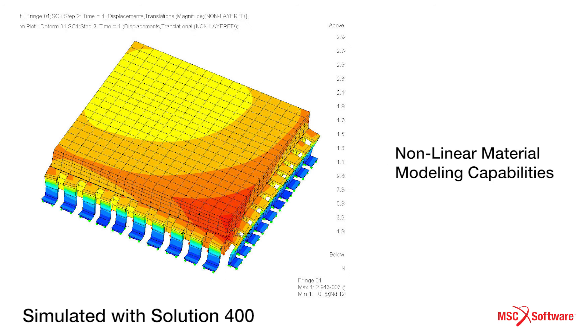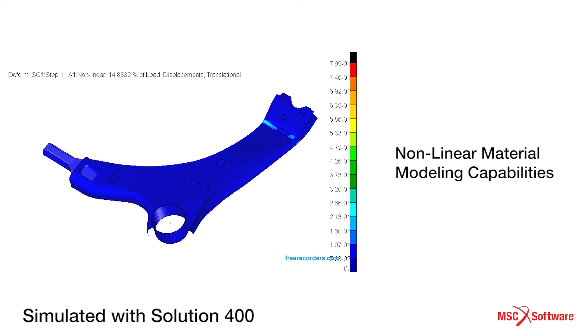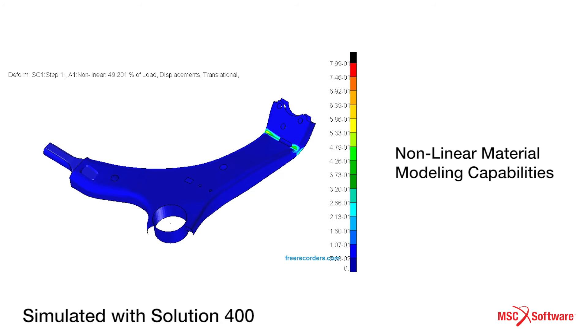The nonlinear material modeling capabilities — for example for plastics, rubbers, and plastic materials — are also very highly used by the majority of users.